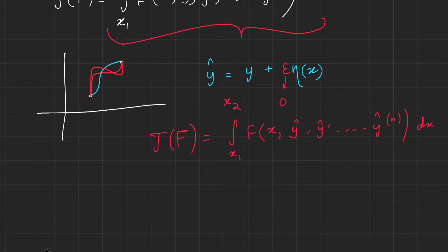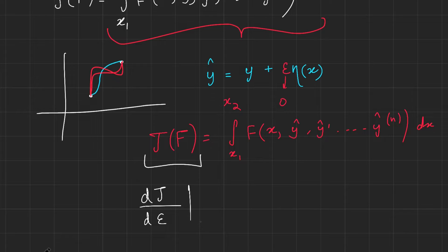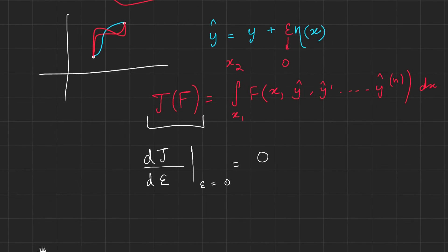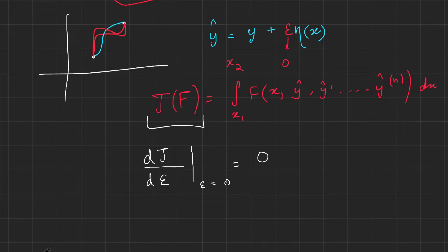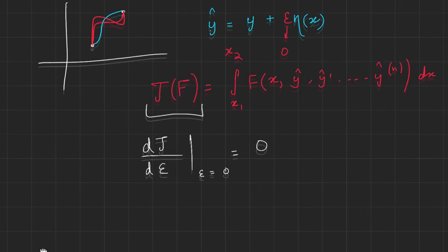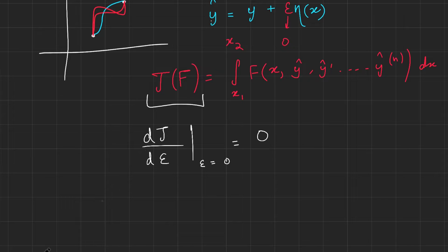If we consider J(f) as a function of epsilon, by normal calculus rules, the derivative of J with respect to epsilon at epsilon equals zero must be zero. This is because it is a turning point — at epsilon equals zero, y_hat equals y, which is the optimizer for this functional. So what is the derivative of J(f) with respect to epsilon? By the chain rule, we can write this out.